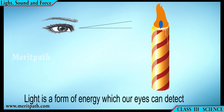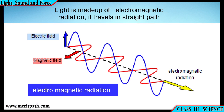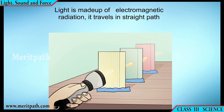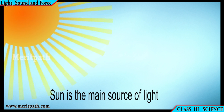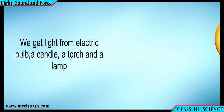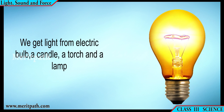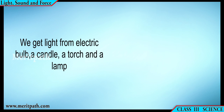Light is a form of energy which our eyes can detect. It is made up of electromagnetic radiation and it travels in a straight path. The Sun is the main source of light. We also get light from electric bulbs, a candle, a torch, and a lamp.